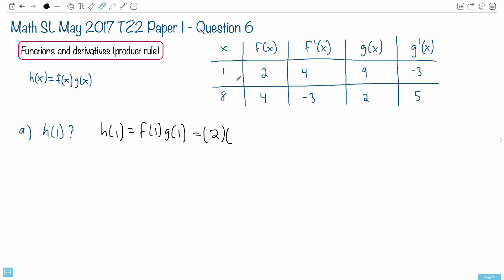Then g of 1, we need that one. So g of 1, so that's where g and 1 match. That's a 9. So we have 2 times 9. And that's it. It's just a matter of doing 2 times 9, which is 18. And there we go. We've got h of 1.